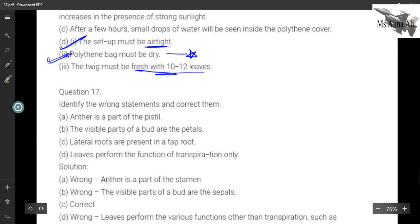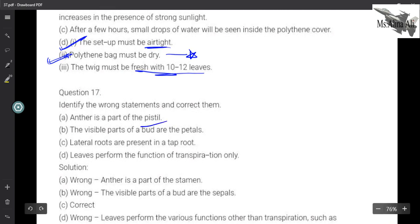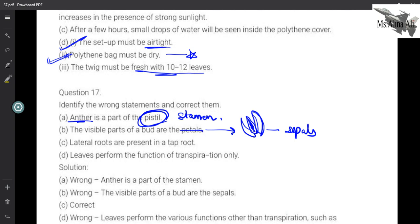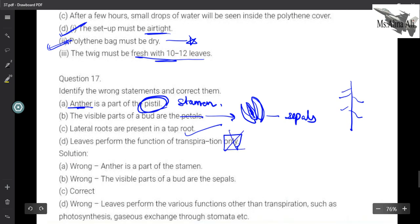Now question 17 says identify the wrong statement and correct them. First, anther is the part of pistil. What is wrong here? Pistil is the female part, but this is part of stamen which is a male part. Next, the visible parts of a bud are the petals. No, when there is a bud the flower is not visible, we see the green covering of small leaves around it, we call them sepals. So this petal will be cut and sepals will come here. After that, lateral roots are present in the tap root. This is correct because the tap root comes here and the little roots come here, we call them lateral roots. Next, leaves perform the function of transpiration only. No, this 'only' will not come because it has too many functions like photosynthesis and transpiration.